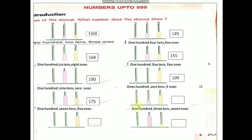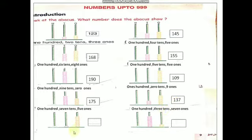Come to the next one. In the 100's place, 1 bead — so 100. In the 10's place, 3 beads — so 3 tens. In the 1's place, count children — 7 beads — so 7 ones. 100, 3 tens, 7 ones — you have to write 1, 3, 7. What is the number? 137.